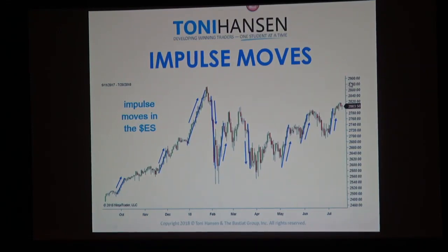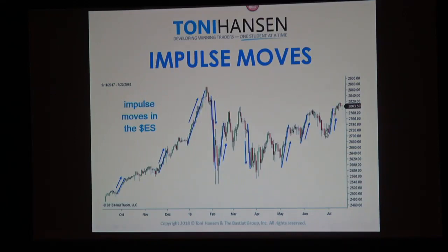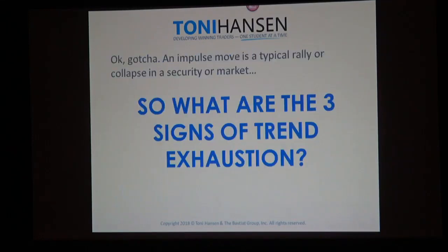Impulse moves are fractal in nature, just like trends — you're going to see them on a smaller time frame and a bigger time frame. The larger impulse moves happen on a larger time frame, and when you get into back-and-forth action you'll see smaller, more consistent ones happening a lot more often. An impulse move is a typical rally or collapse in a security or market where it's average to stronger-than-average momentum.